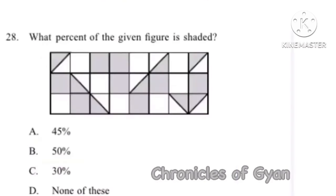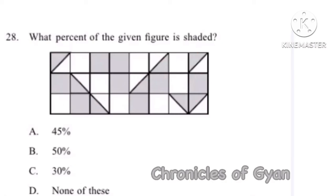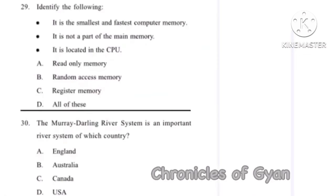Question 29: It is the smallest and fastest computer memory. It is not a part of the main memory. It is located in the CPU. The correct answer is Option C, Register Memory.